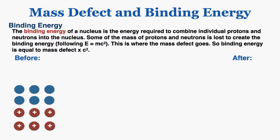We can now talk about the binding energy of an atom. The binding energy of a nucleus is the energy required to combine individual protons and neutrons into the nucleus. Some of the mass of protons and neutrons is lost to create the binding energy — this is a situation where mass is changed into energy using E equals mc squared. This is what happened to the mass defect; this is where that missing mass goes. So binding energy is always equal to mass defect times c squared.